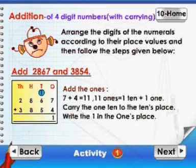Addition of 4-digit numbers with carrying. Arrange the digits of the numerals according to their place values and then follow the steps given below. Add 2867 and 3854.